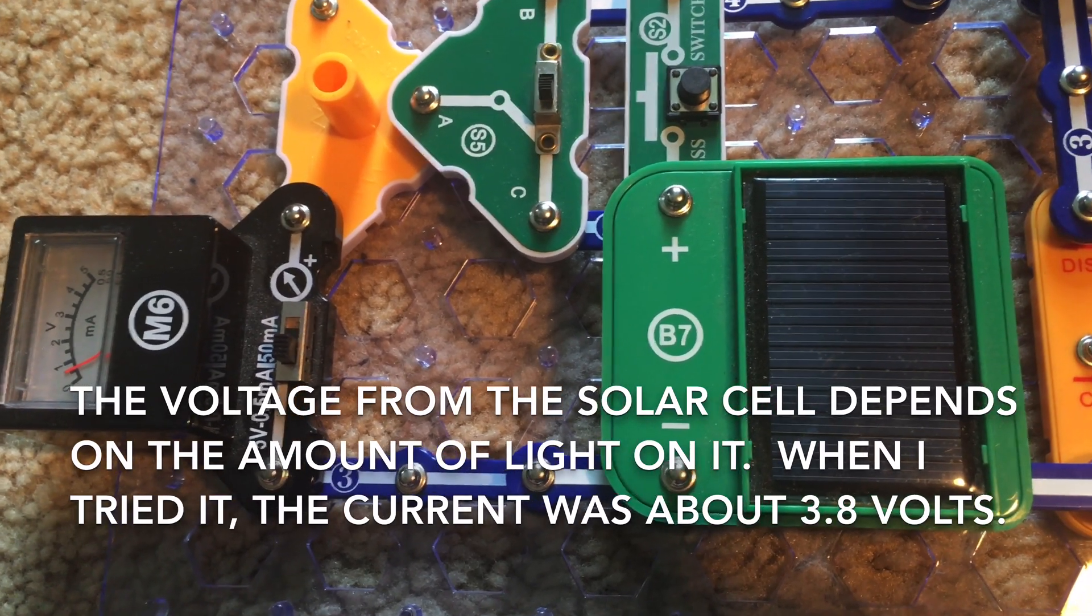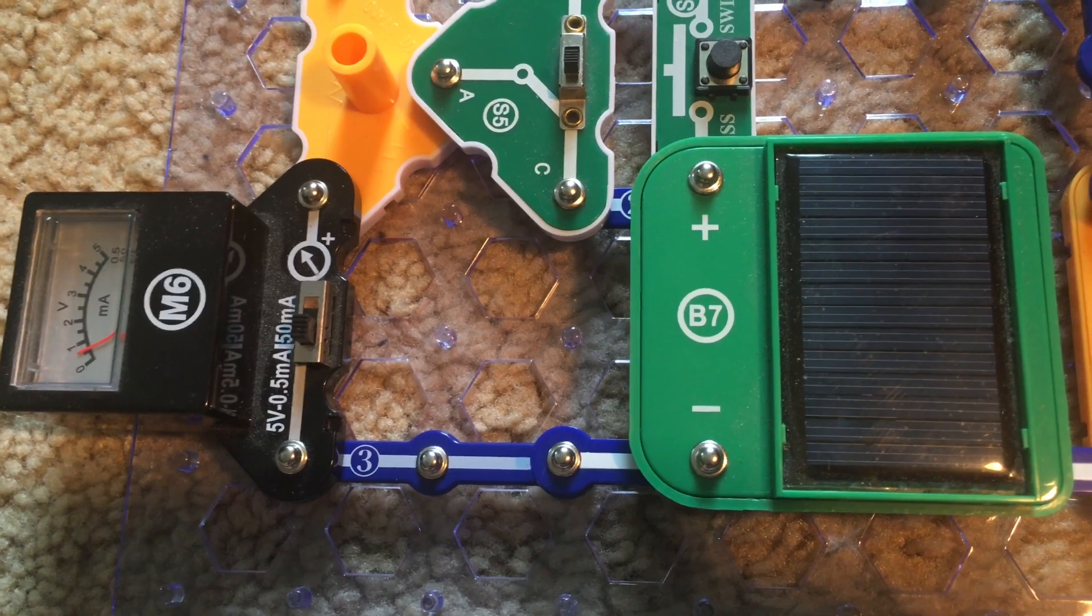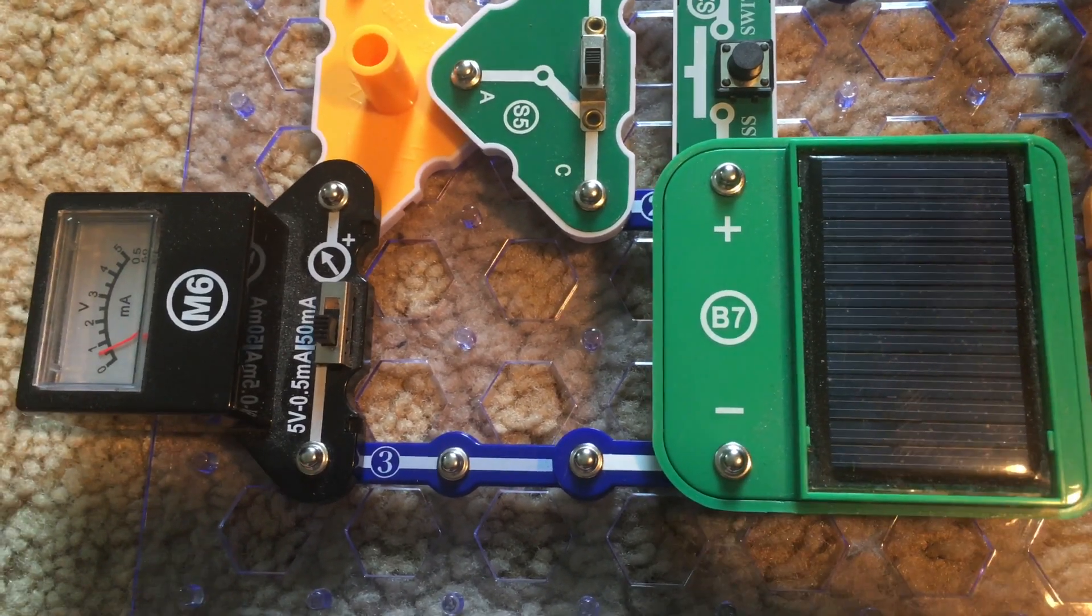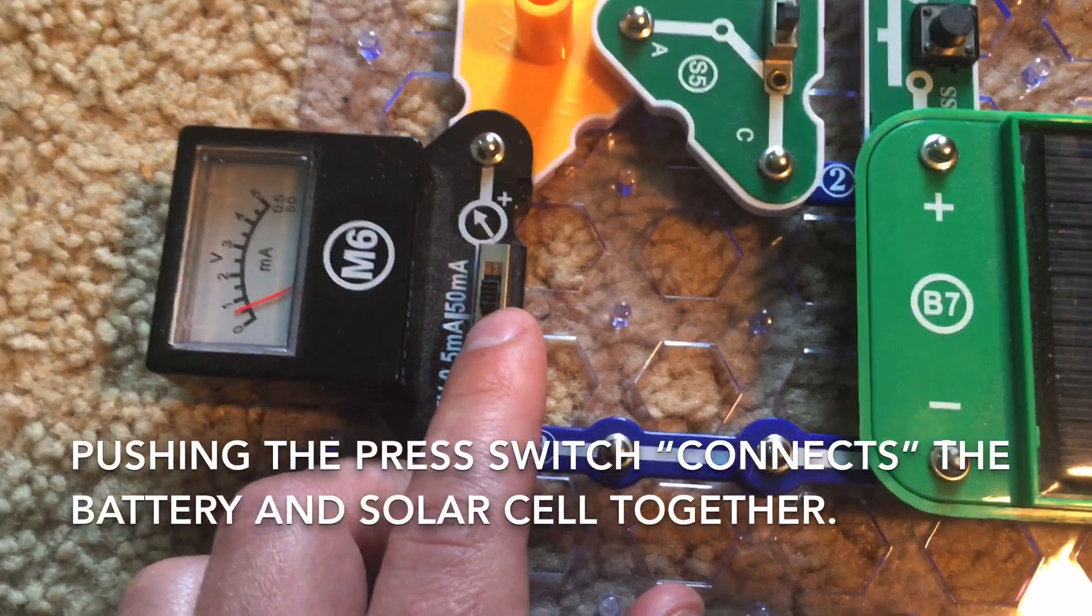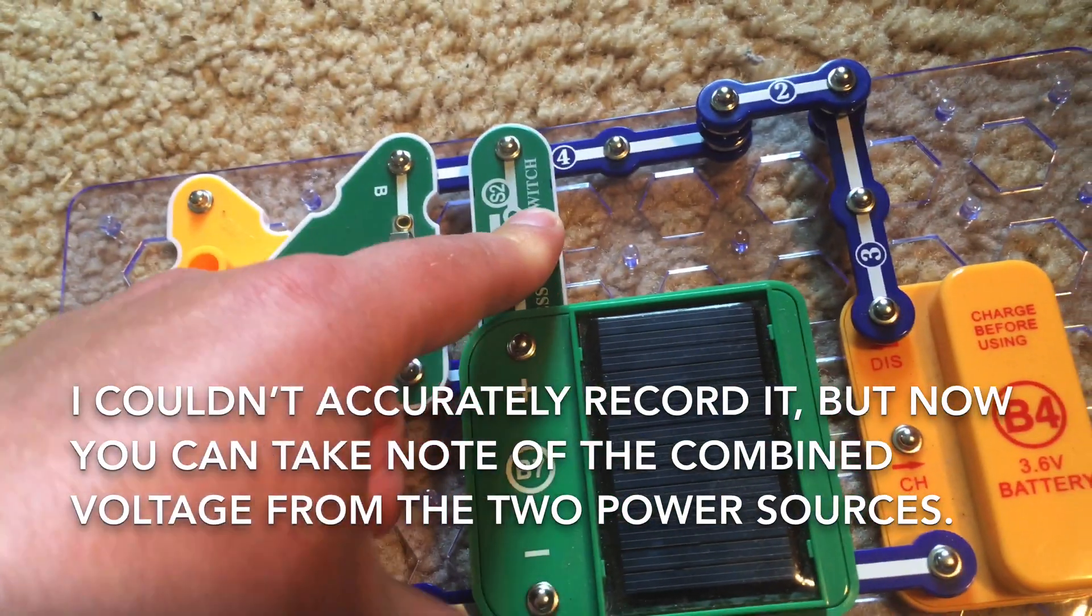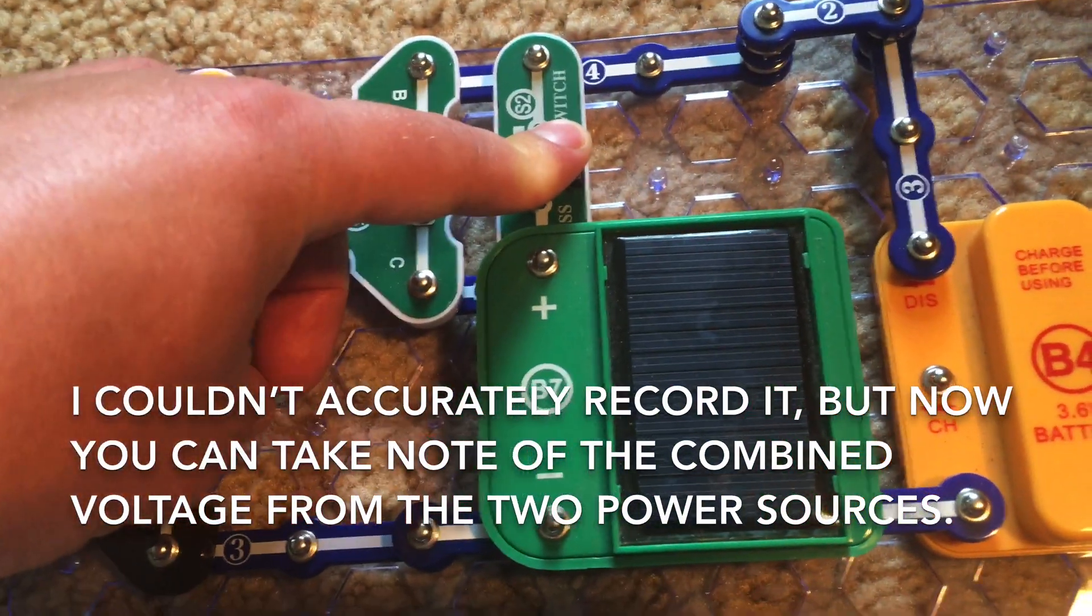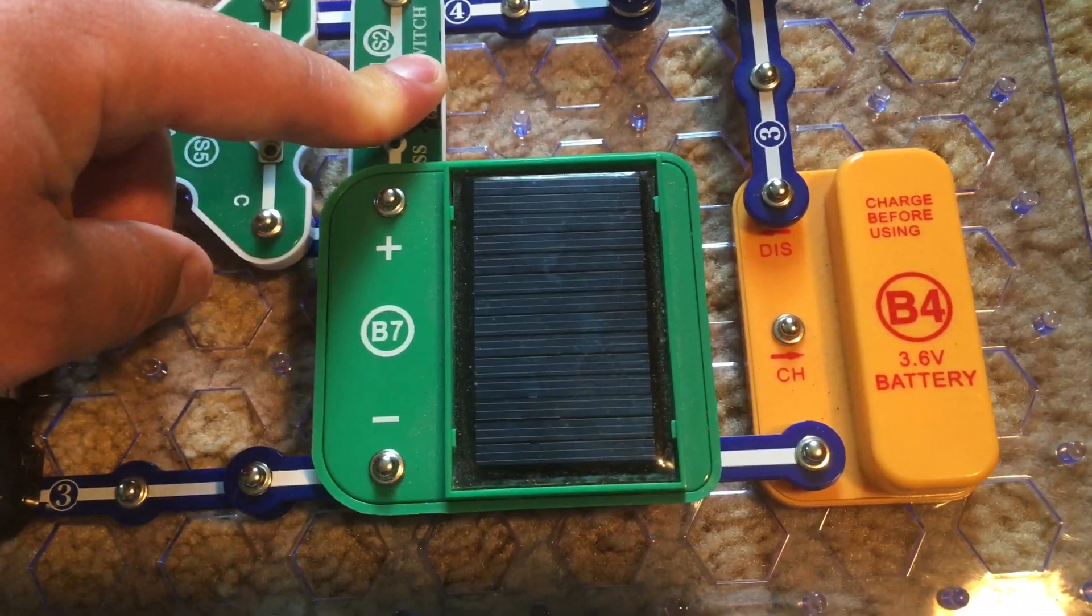When I put my desk lamp right up to it, it measured I would say about 3.8 volts. Now when you push the press switch, it connects the two sources together and the meter will show the resulting voltage.